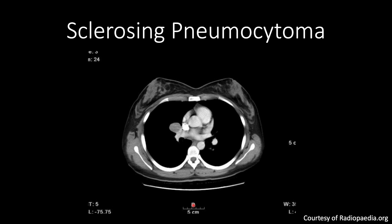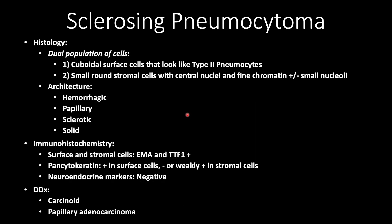This is courtesy of Radiopedia. We can see a well-circumscribed solid mass near the pulmonary vasculature, and as you can see here, in this case, there are no calcifications.